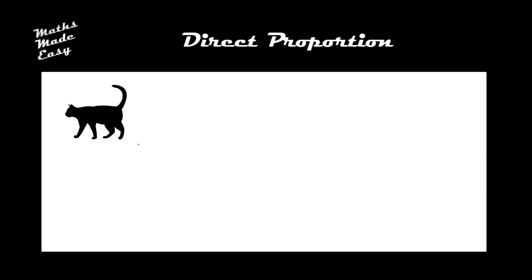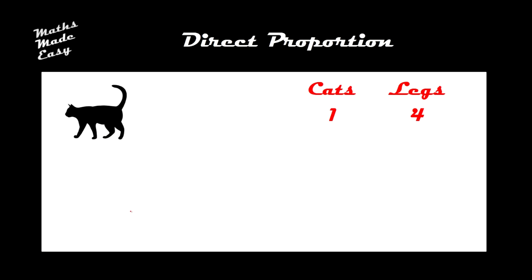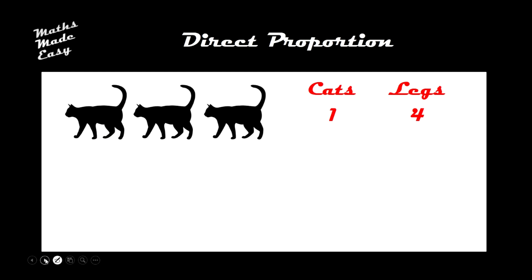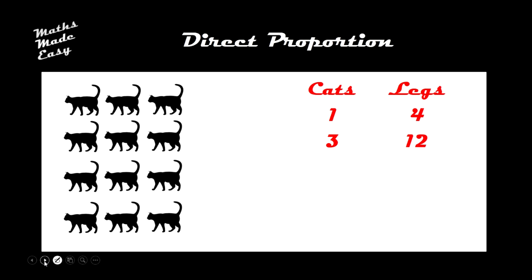Let me give you an example. The number of cats I have is directly proportional to the number of legs I have. So if I have one cat, then there are four legs. If I have three cats, then there are twelve legs. And if I have twelve cats, then there would be 48 legs altogether.